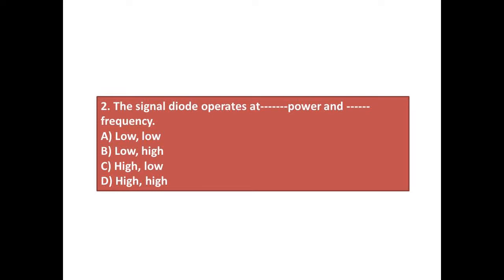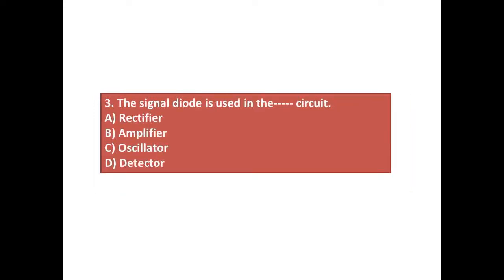Question number two: The signal diode operates at dash power and dash frequency. Answers: A) low low, B) low high, C) high low, D) high high. Question number three: The signal diode is used in the dash circuit. Answers: A) rectifier, B) amplifier, C) oscillator, D) detector.